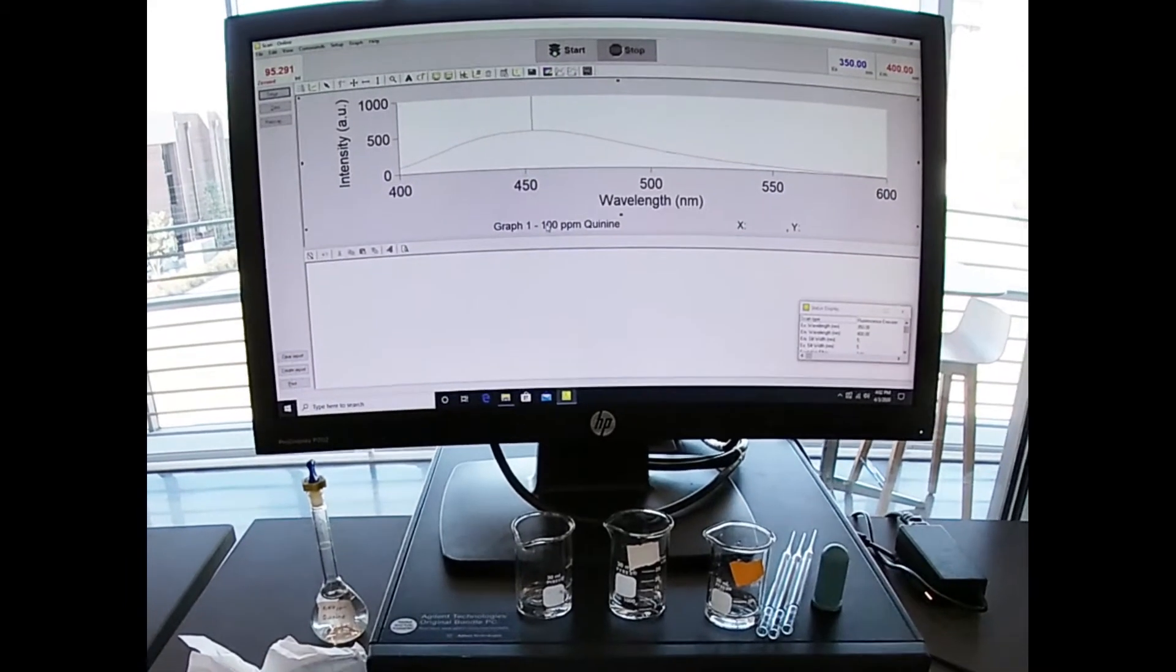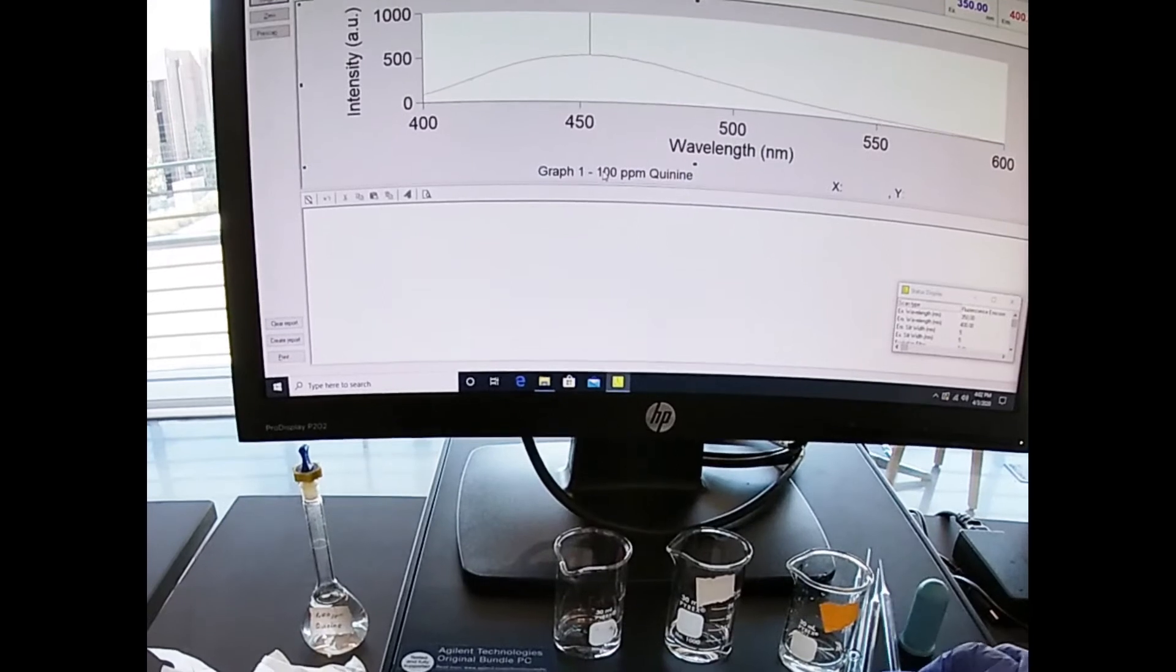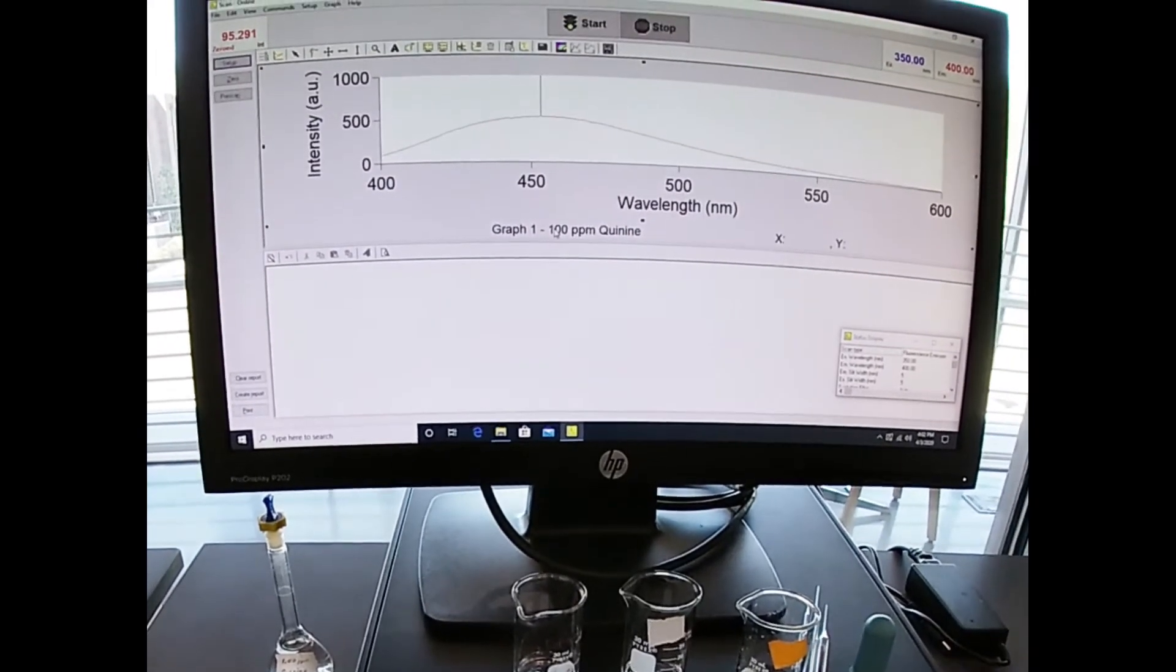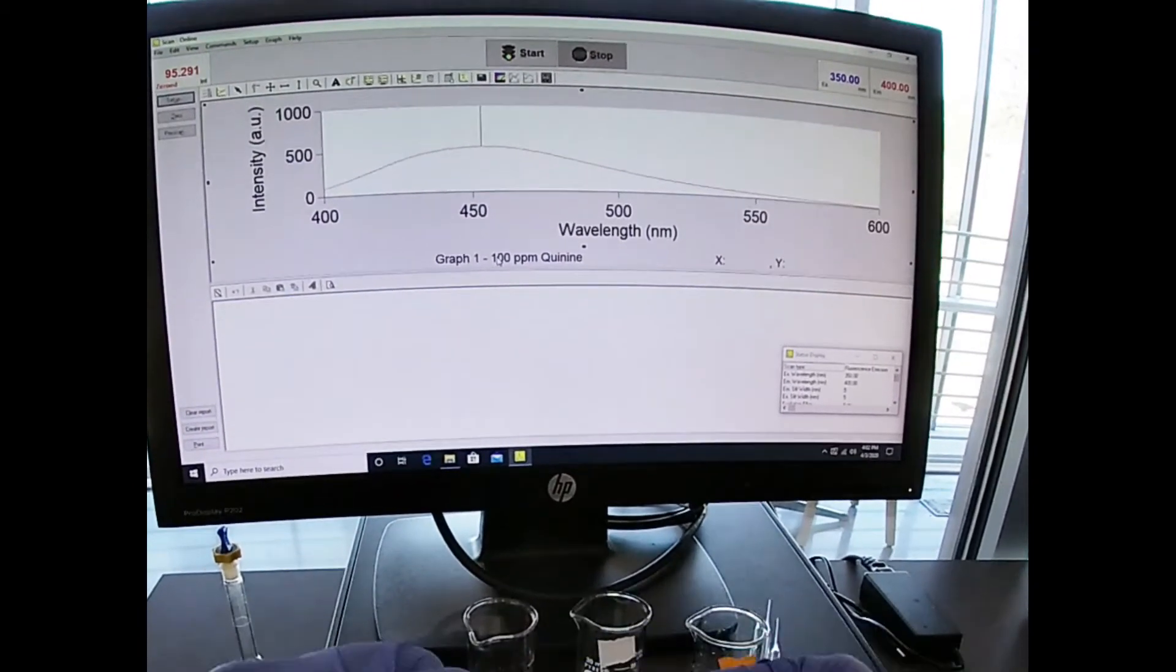We're going to start with a blank, then measure the reference sample, and then the urine sample. I have these labeled. Our reference sample had the white label, our urine sample had an orange label, and we have no label on our blank.